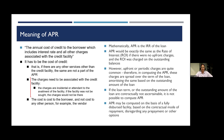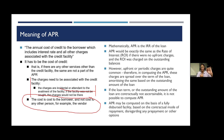The charges need to be associated with the credit facility — meaning they are incidental or attendant to the availment of the facility. If the facility was not sought or was not granted, the charge would not have been there. The cost is cost to the borrower, not to any other person. For example, subvention charges coming from the vendor are not a cost on the borrower; they are a cost on a third party. We are not looking at the lender's revenue — we are looking at the borrower's cost. Third-party cash inflows therefore do not form part of the APR computation.